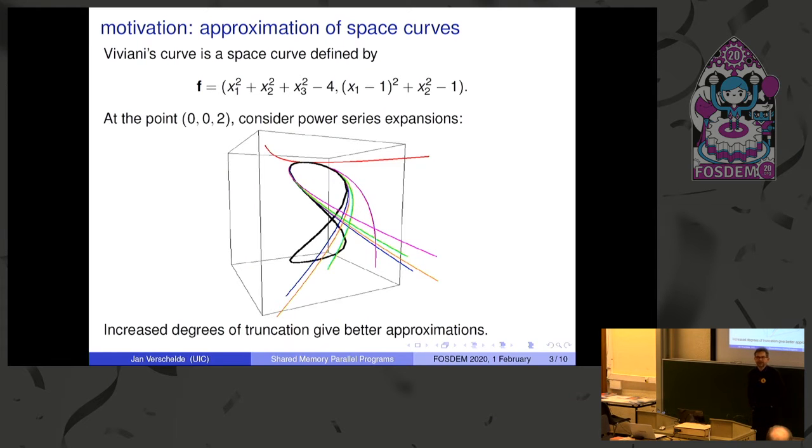Here is the motivation. The picture is kind of misleading. We're actually looking at polynomial equations - two polynomials in three unknowns. They define a space curve, this figure eight that's bended. You are positioned at the point (0,0,2). The point (0,0,2) satisfies these two equations. You know one point on a curve and you want to continue. You want to see what lies ahead.